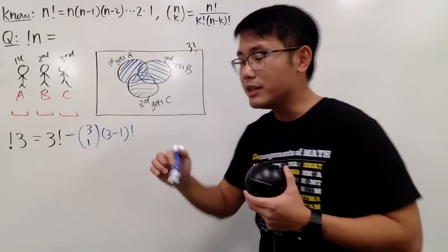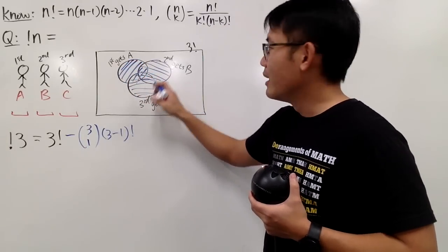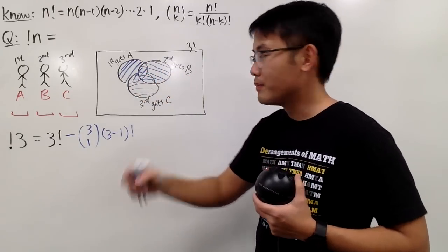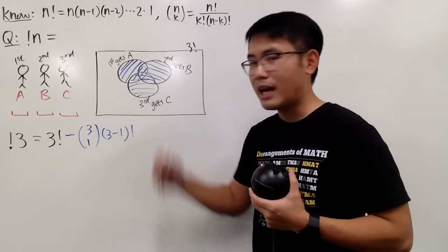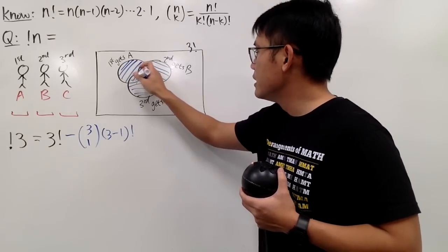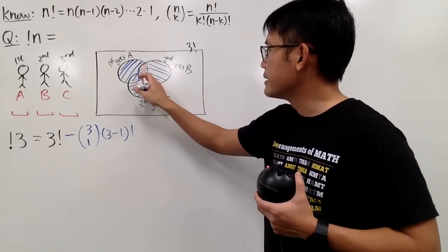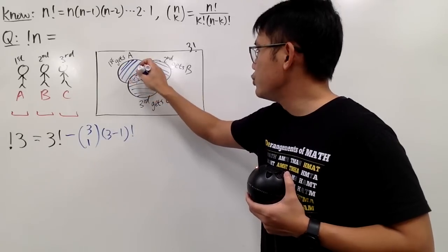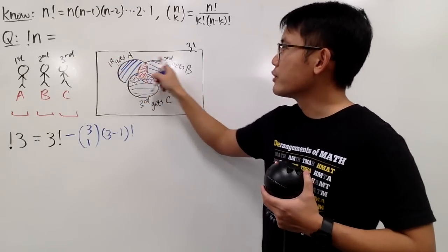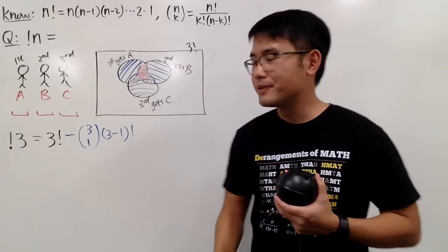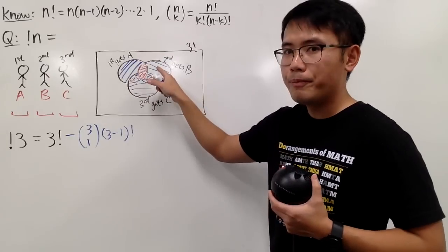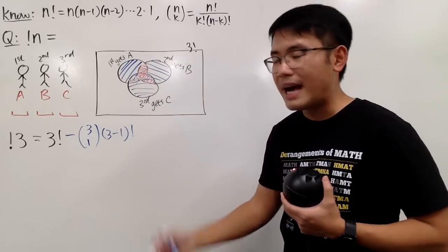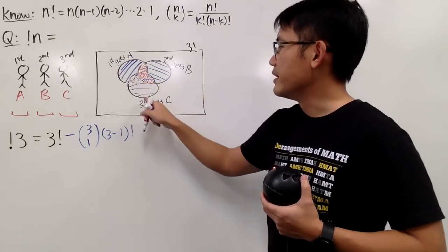However, when you do this subtraction, notice that when I take away this portion from the first circle and then take away this portion, this intersection here — I took it away twice. So I actually have to put it back because I double counted; I subtracted it too many times. So I have to put back this intersection here. Likewise, I also have to put back this intersection and this intersection. Let's focus on one of these intersections — what does it represent? This represents the first person and also the second person both getting their gifts back.